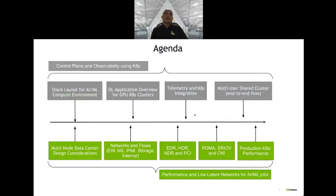The agenda of this tech talk is broadly split into two sections. The top-level gray colored boxes indicate control plane operations and setup. The bottom-level green boxes indicate the network — the speeds and feeds, how we integrate RDMA and SRIOV — and then the performance numbers coming out of this exercise. The stack has to be laid out first for the compute environment, then we launch DL applications as containers in the K8S environment, collect telemetry metrics, and ensure fairness in a multi-user multiplexed environment.